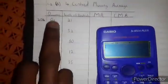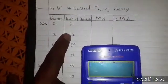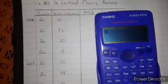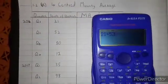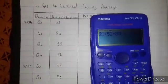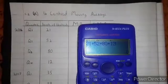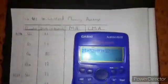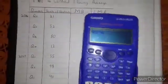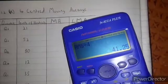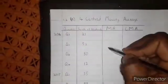To calculate the moving average, we must add 21 plus 52 plus 80 plus 12, then divide by 4. We add four numbers because we are calculating the four-point standard moving average. So our first moving average is 41.25. The value 41.25 must be placed in the middle.